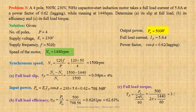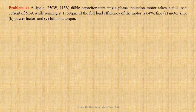A 4-pole 250 watt 115 volt 60 hertz capacitor start single phase induction motor takes a full load current of 5.3 ampere while running at 1760 revolutions per minute. If the full load efficiency of the motor is 64 per cent, we have to calculate motor slip, power factor and full load torque. Let us first write down the given data.